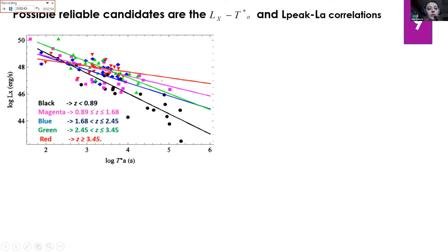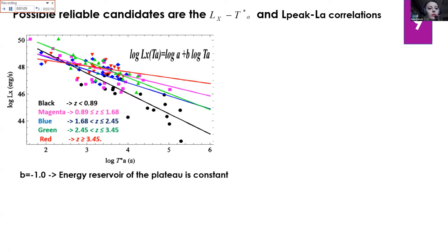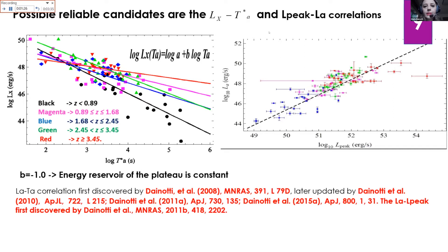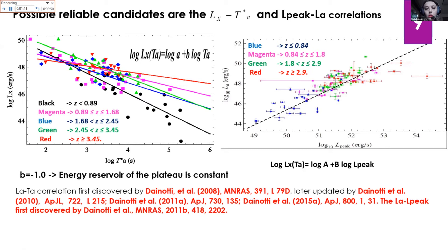For a perfect standard candle, luminosity and time should not evolve with redshift — the slope of the correlation should not change across redshift bins. We divided the sample into several redshift bins and noted that the slope changes slightly but not considerably, not more than two sigma. We applied a robust statistical method to remove selection biases and pinpointed that the true correlation has a slope b equal to minus one, meaning the energy reservoir of the plateau is constant — first shown in 2008. We continued investigating correlations: the more luminous the prompt emission, the more luminous the plateau as well. The correlation is intrinsic to GRB physics, not due to selection biases.